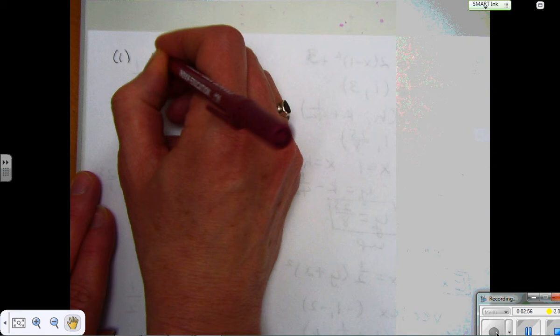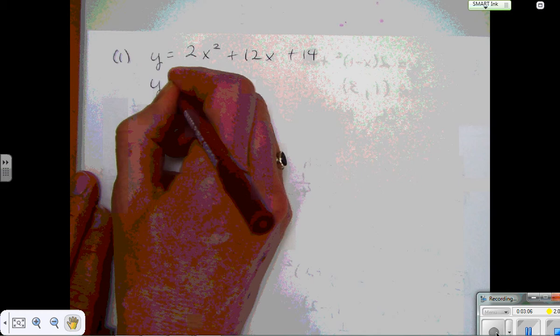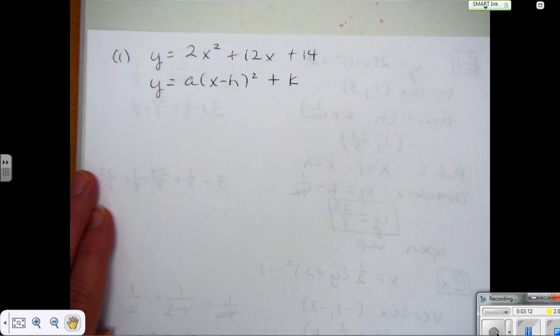Okay, so number 1, y equals 2x squared plus 12x plus 14. So they want us to put it in standard form. Just to remind you what it's going to look like, I'm going to write standard form right underneath it. Okay, so this is going to be a vertical parabola.